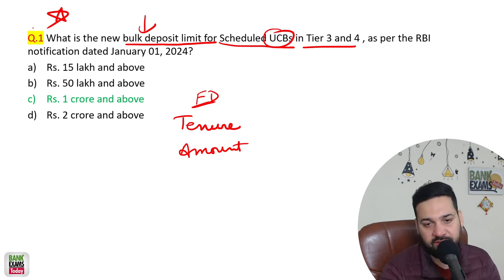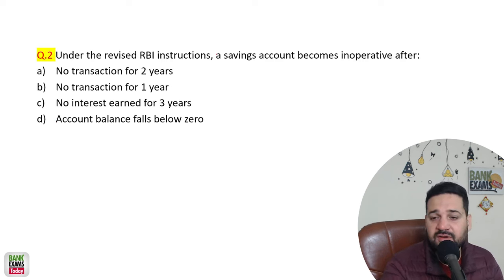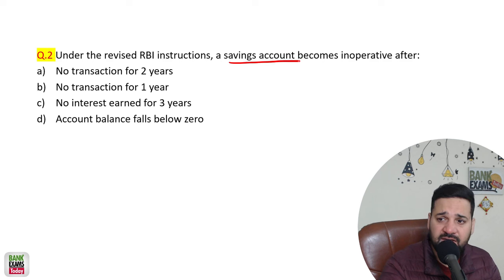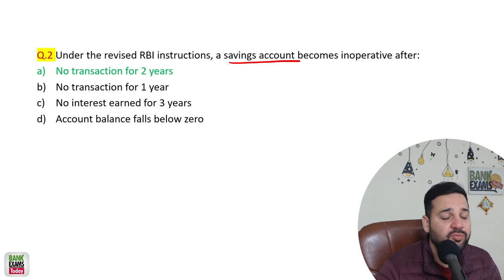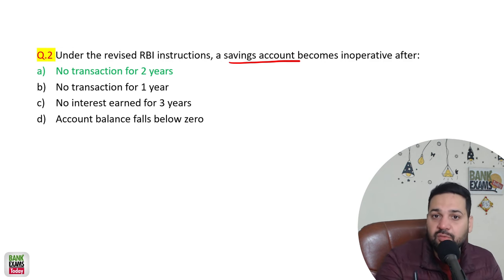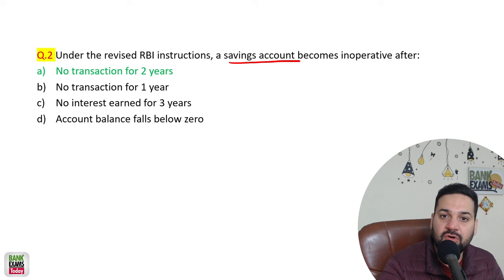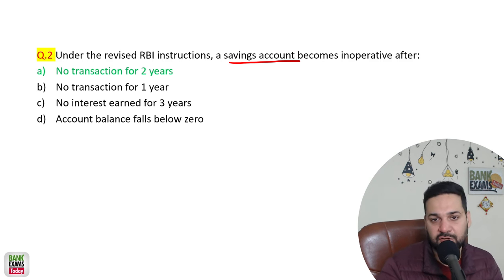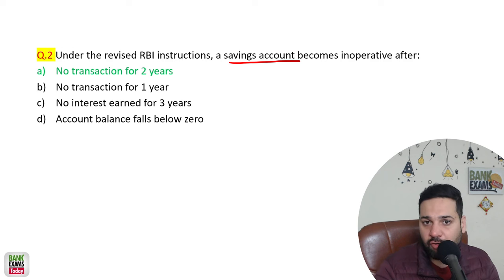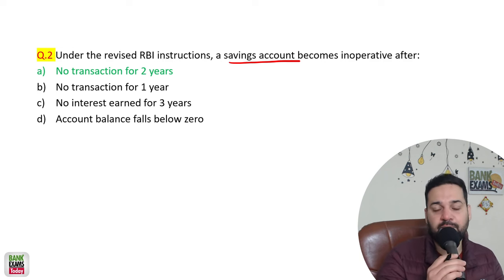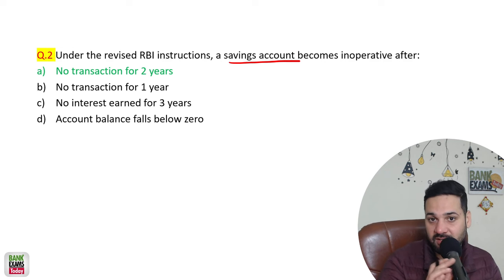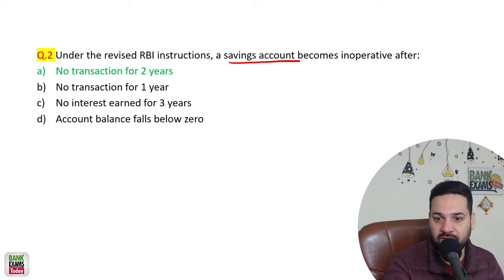This is also very important: under the revised RBI guidelines, a savings account becomes inoperative after inactivity for two years. If there is no customer-induced transaction — meaning you depositing money yourself, making a withdrawal, or writing a cheque — the account becomes inoperative. Any auto-transaction, SMS charge, or debit card charge imposed by the bank is not a customer-induced transaction; that is a bank-induced transaction.